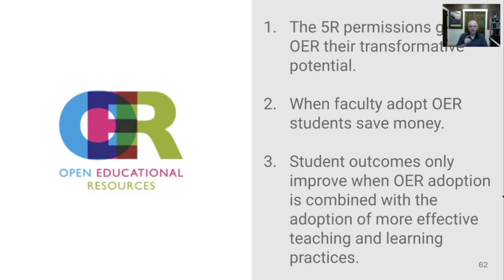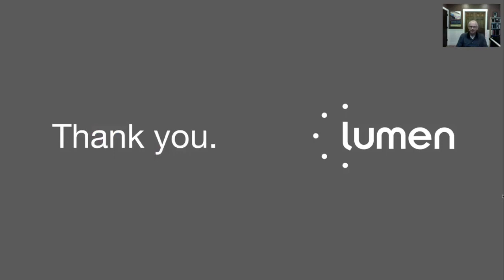So that's a lot. How do we summarize that very quickly? I'd summarize everything you always wanted to know about OER in three key points. First, that the 5R permissions we have access to with OER are what give OER their transformative potential. Second, that when faculty adopt OER, their students will save money. And third — the most important one that we need to pay more attention to collectively — student outcomes will only improve when OER adoption is combined with the adoption of more effective teaching and learning practices. And OER give us lots of opportunity to do that. I'm David Wiley. Thanks very much for joining me.